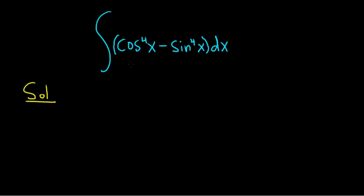So the first thing we might notice is that this factors in a clever way. You can write this as cosine squared x minus sine squared x times cosine squared x plus sine squared x. It's the difference of squares, but everything is to the fourth power.